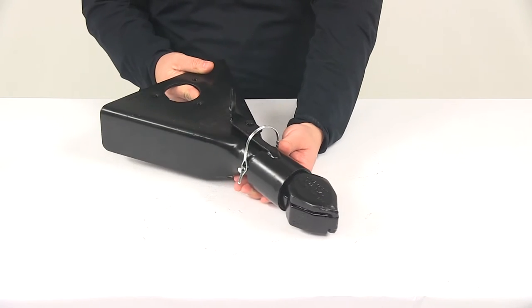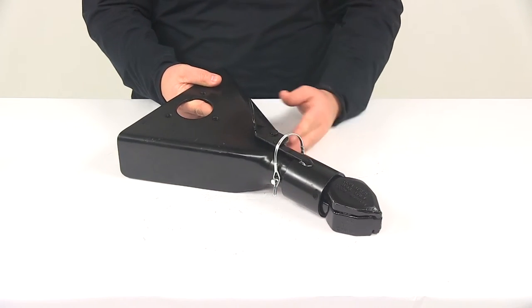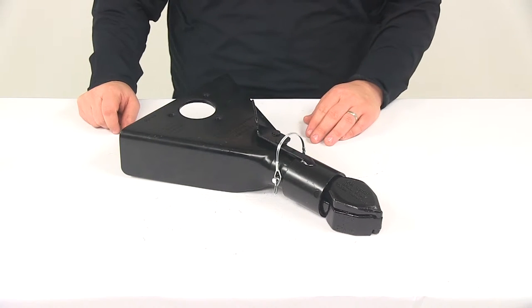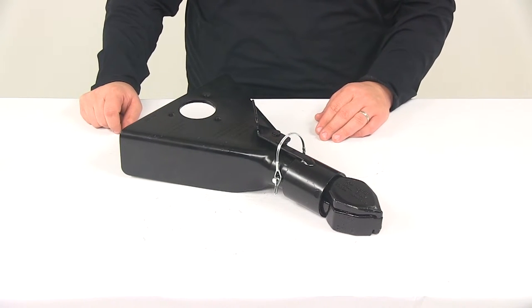The coupler itself is made from a sturdy steel construction and it's going to have a black powder coated finish on it so it's going to add a lot of protection, especially from rust and corrosion.